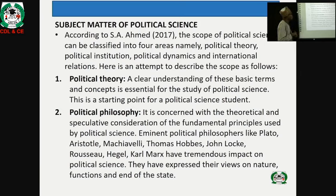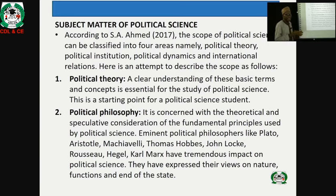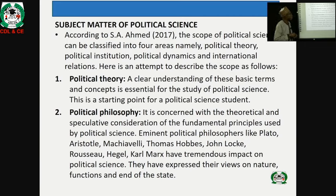The subject matter of political science — what does it entail? According to Samet (2017), the scope of political science can be classified into four areas: political theory, political institutions, political dynamics, and international relations.